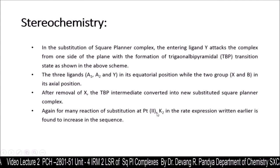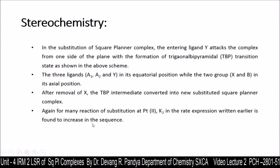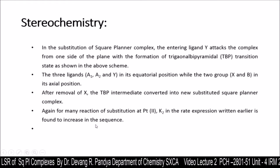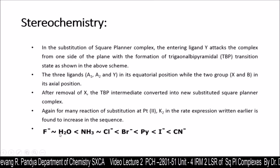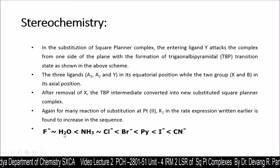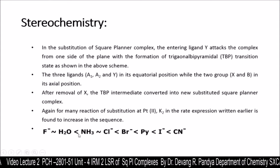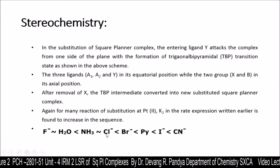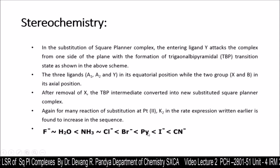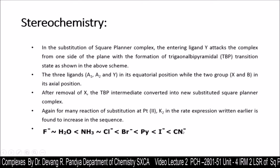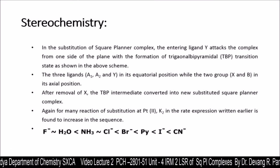For many substitution reactions at Pt(II), the rate constant k₂ in the rate expression increases in the following sequence: F⁻ or H₂O (slowest) < NH₃ ≈ Cl⁻ < Br⁻ < pyridine < I⁻ < CN⁻ (fastest). This gives the increasing order of nucleophilicity observed in the rate constant.